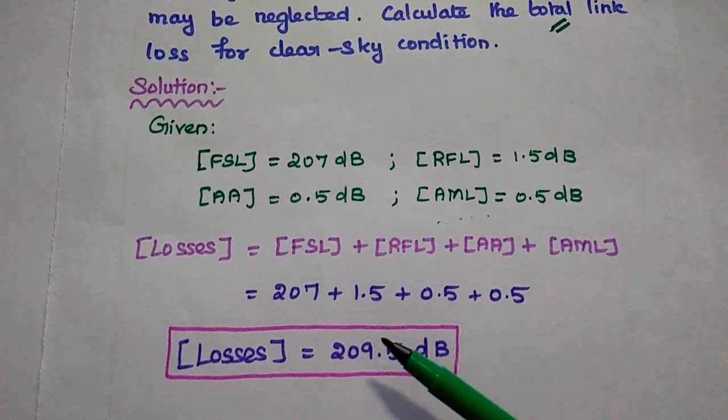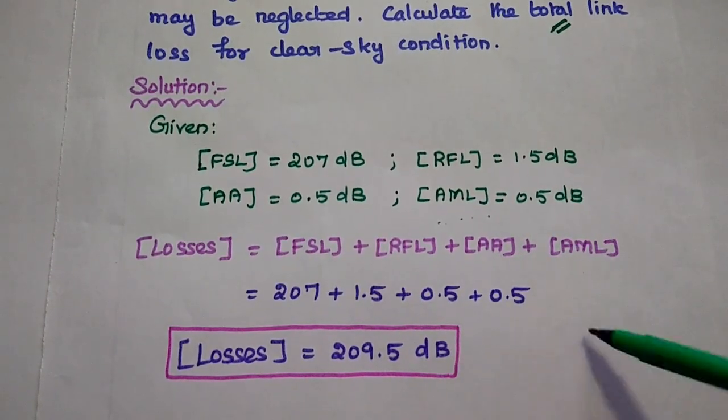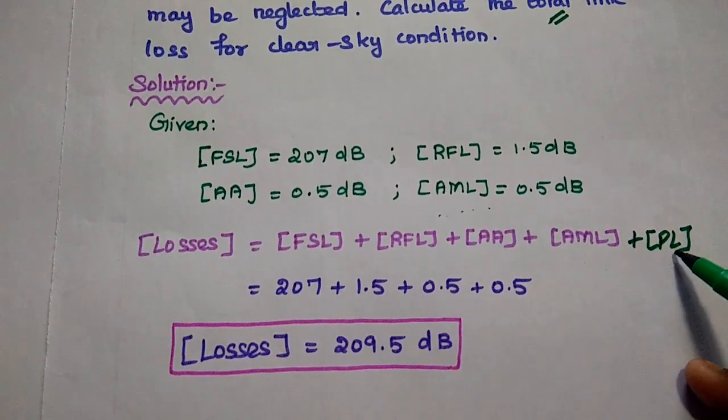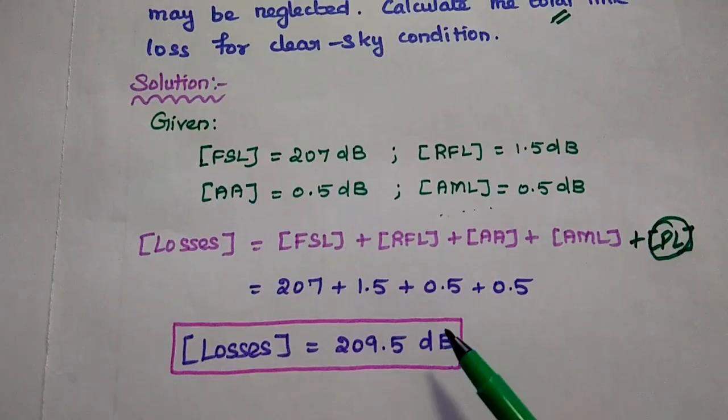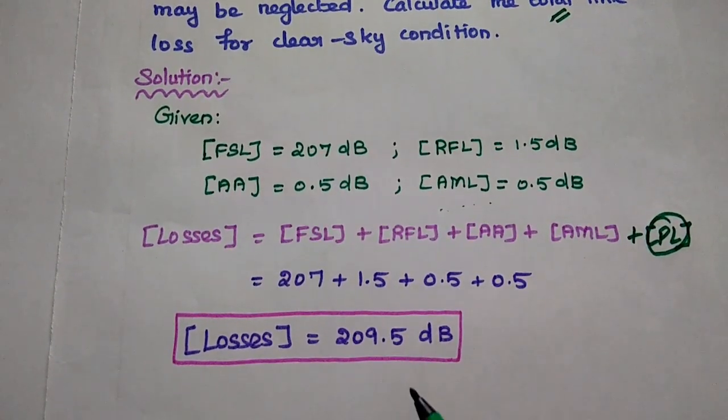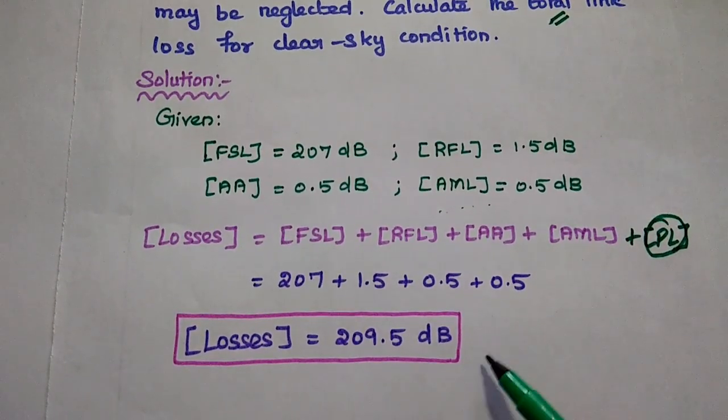To get the overall total link loss, we can simply add all the losses. Actually, the formula has one more loss, that is polarization loss, but here it may be neglected. Simply we are going to add all the losses to get the total link loss. Its value is 209.5 dB.